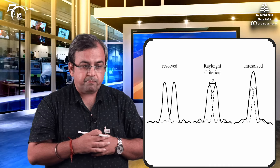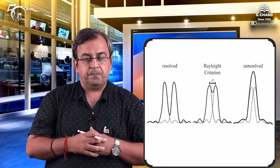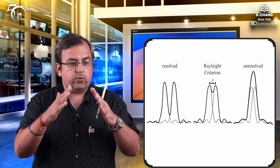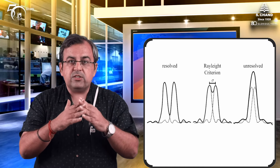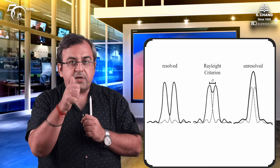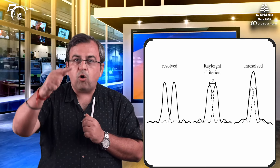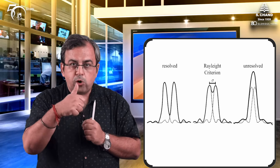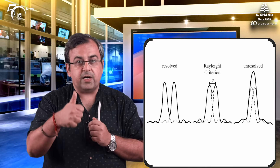But how can we do that? There is a certain criteria that should be followed. This was given by one of the scientists known as Lord Rayleigh. Lord Rayleigh gave a criteria for resolution. He said that two point sources in spectral lines of equal intensity are just resolved by an optical instrument if the maxima of one is coinciding with or falls on the first minimum of the diffraction pattern of the other.